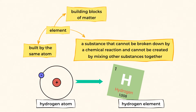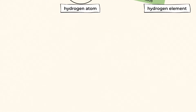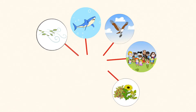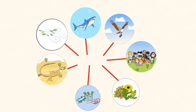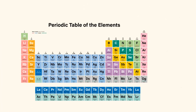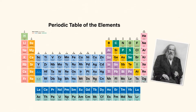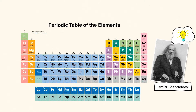Elements are built by the same atoms. They are the building blocks of matter. Everything from the air we breathe to the organisms we share this world with is composed of them. With this in mind, scientists began to work to list as many elements as they could, and this concept of elements is what led to the periodic table of elements.